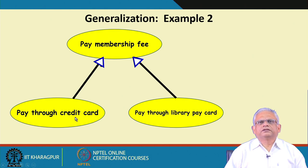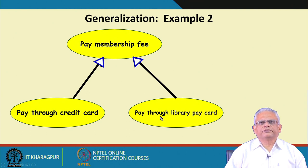There are two payment options: pay through credit card, or pay through library pay card. For the library card, it is internally validated — the library card number is entered, the available amount is checked, and the amount is debited. For credit card, a specific code is sent to an external system, authenticated, and then the amount is debited and deposited in the library. Both of these inherit the 'pay membership fee' base use case with its common procedures.